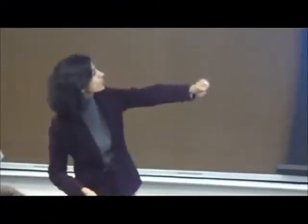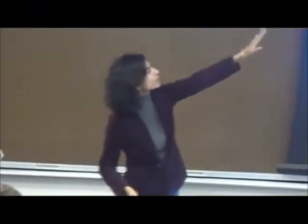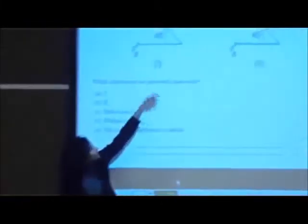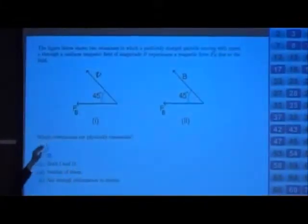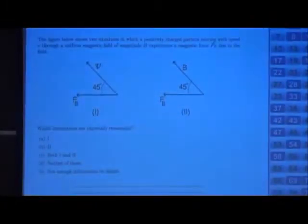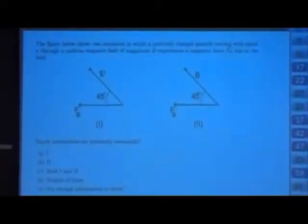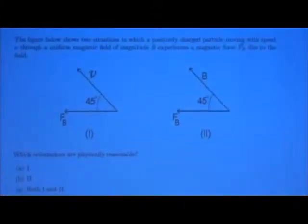Let's go over the first question. The figure shows two situations. This is the magnetic force, this is the velocity, this is the magnetic field. The question asks which of the orientations is physically reasonable: one, two, both, neither, or not enough information to decide. You have one minute - please talk to the person next to you.